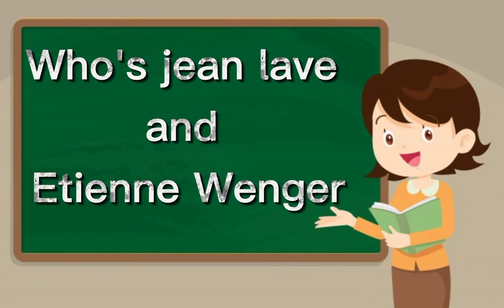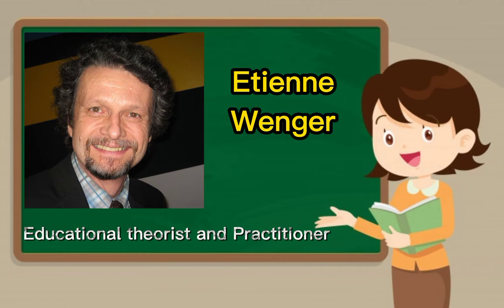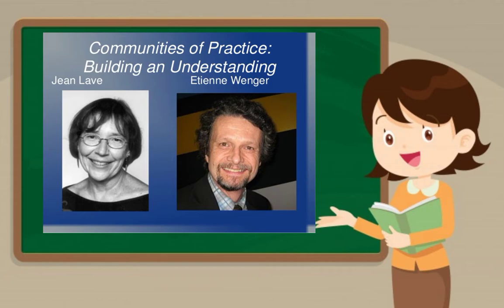First, who is Jane Lave and Etienne Wenger? Jane Lave is a social anthropologist who theorizes learning as changing participation in ongoing changing practice. Her life challenges conventional theories of learning and education. Etienne Wenger is an educational theorist and practitioner, best known for his formulation of the theory of situated cognition and his more recent work in the field of communities of practice.